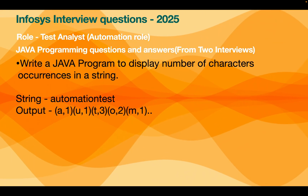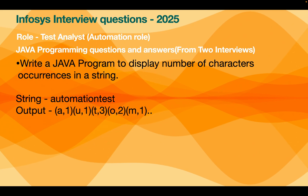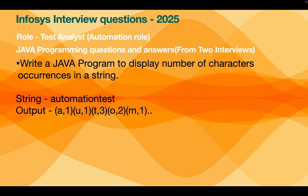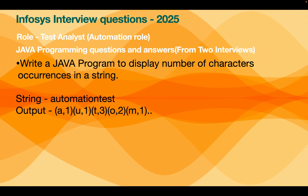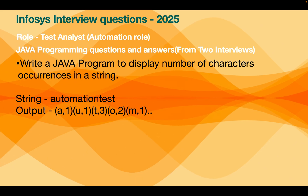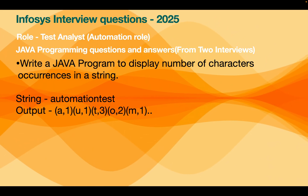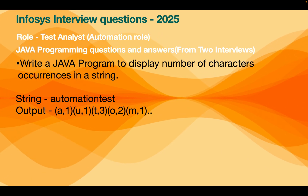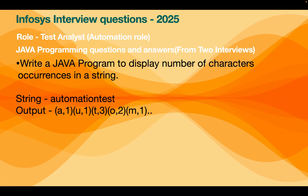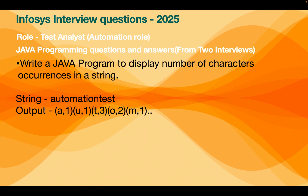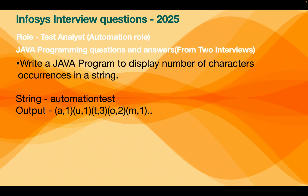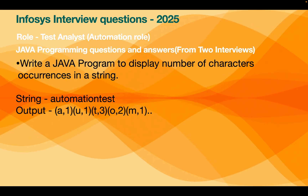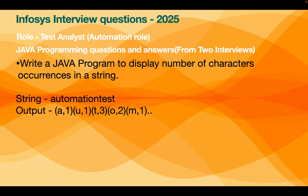The final question was a Java programming task: write a Java program to display the number of occurrences of each character in a string. Consider the string 'automation test' — the output should show how many times each character appears, for example 'a' appears once, 'u' appears once, 't' appears three times, and so on. You are given 15 minutes for this final question.